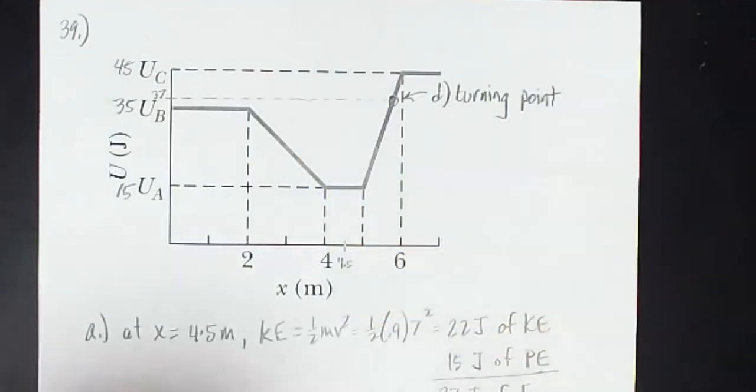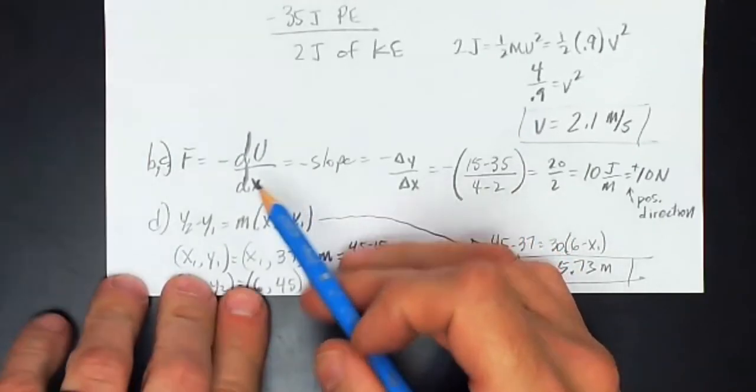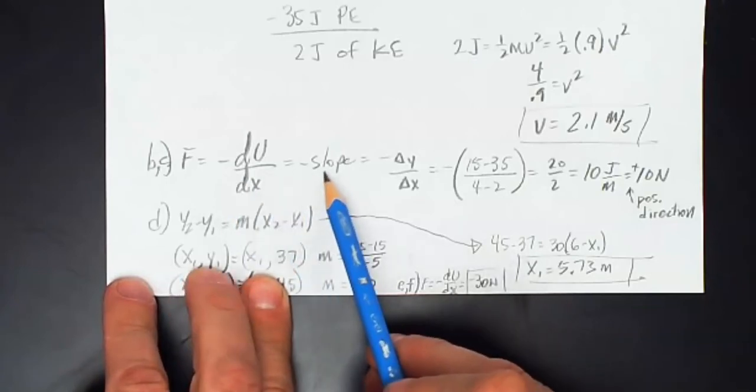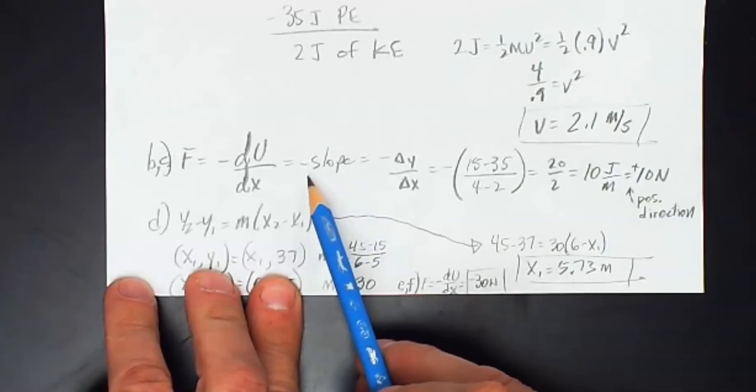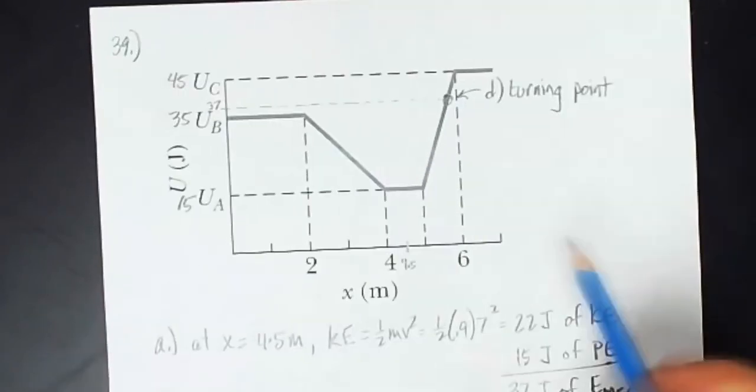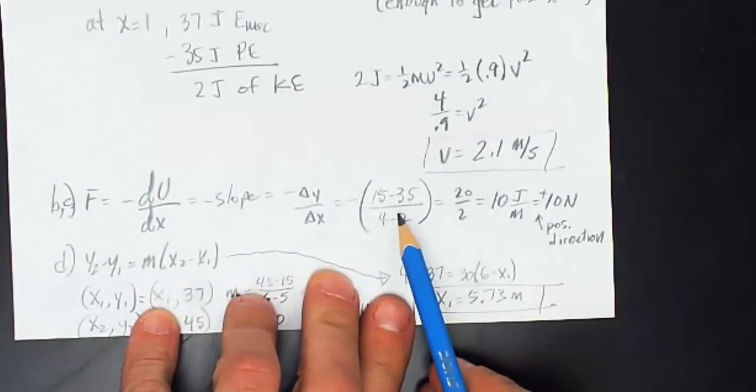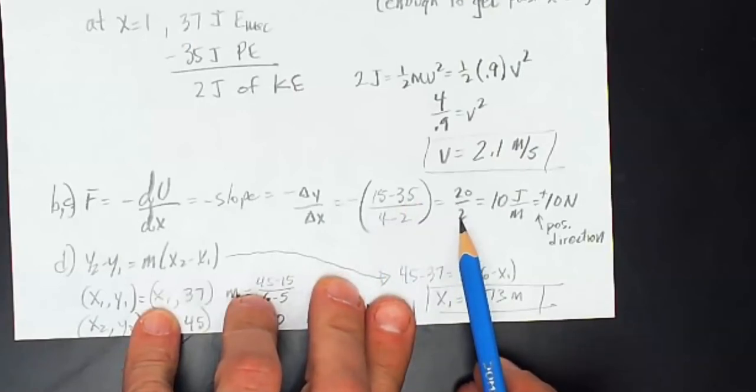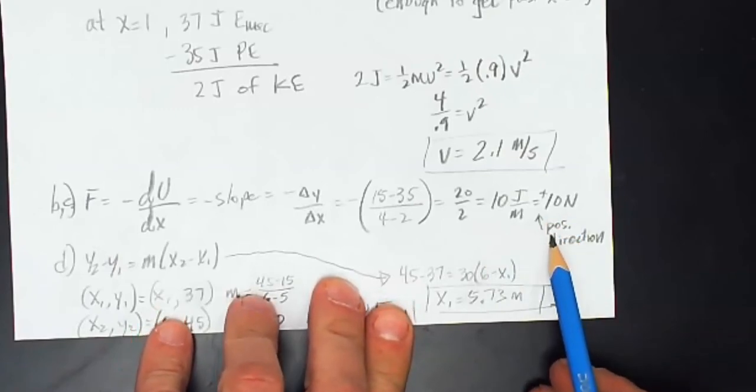We remind ourselves that when we look at potential energy as a function of position, here's our equation that tells us it is the negative of the slope. So whatever the slope is, is the magnitude of the force, and the direction is opposite of the sign of the slope. So in this region, we see here we have a negative slope, and when we take the negative of the negative, we get a positive. So the force is 10 newtons, and it is in the positive direction.